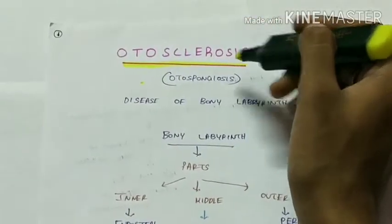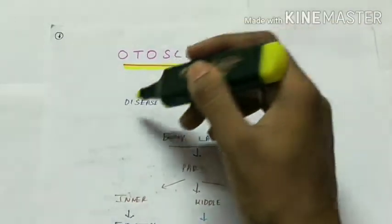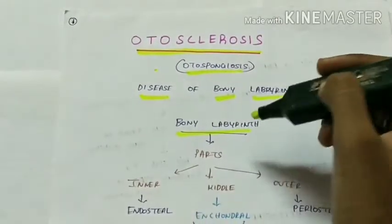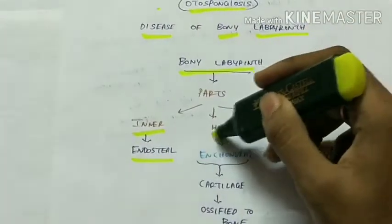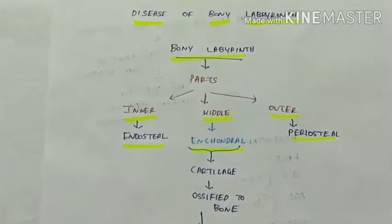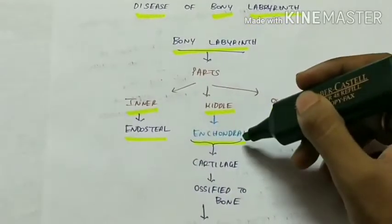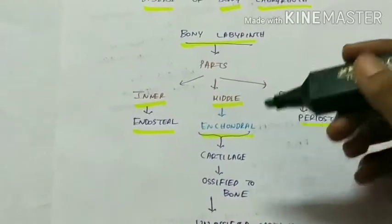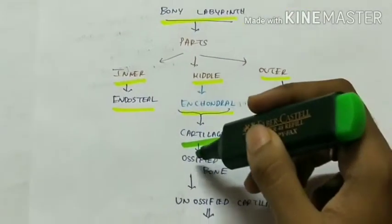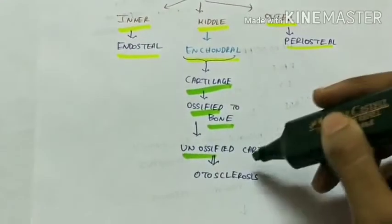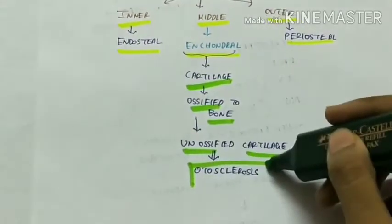Otosclerosis, also called otospongiosis, is a disease of the bony labyrinth, which is part of the inner ear. The bony labyrinth has three layers: the inner endosteal layer, the middle endochondral layer, and the outer periosteal layer. In otosclerosis, the pathology is in the endochondral layer. Normally this layer ossifies into bone, but some un-ossified cartilages remain, leading to otosclerosis.